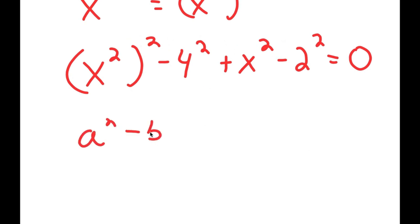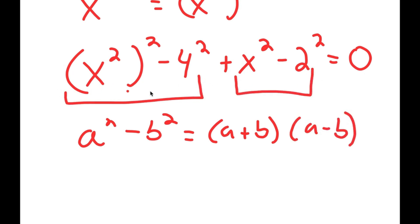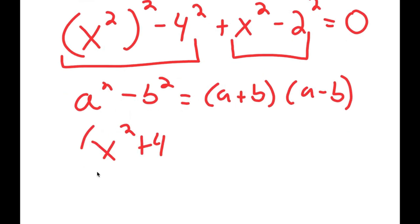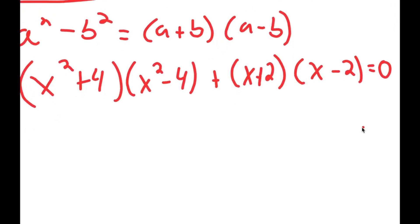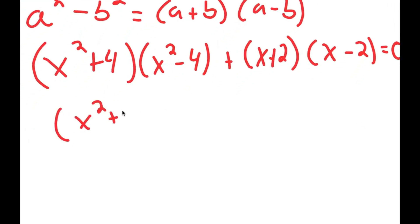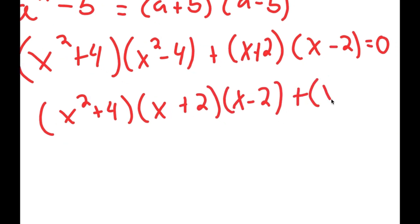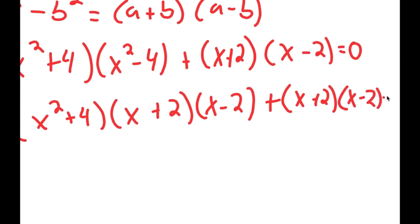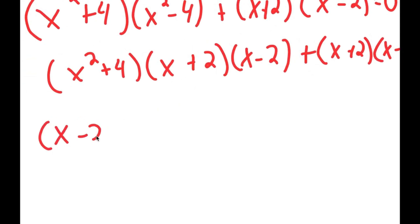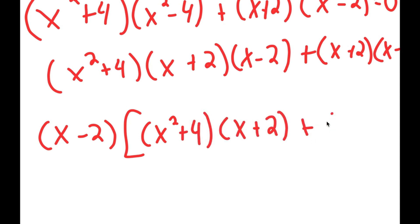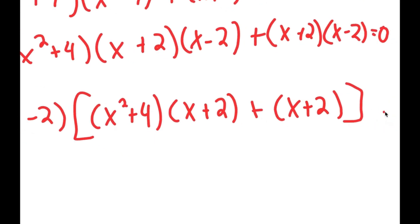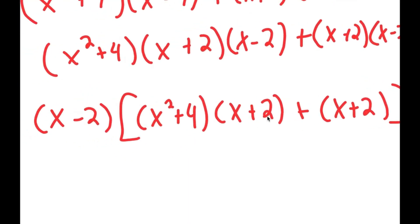Notice how everything is in the power of 2. If I have something in the form a squared minus b squared, this equals a plus b times a minus b. We're going to use this property on these two groups. So I first get x squared plus 4 times x squared minus 4, plus x plus 2 times x minus 2, is equal to zero. Now we can use this property again on x squared minus 4.